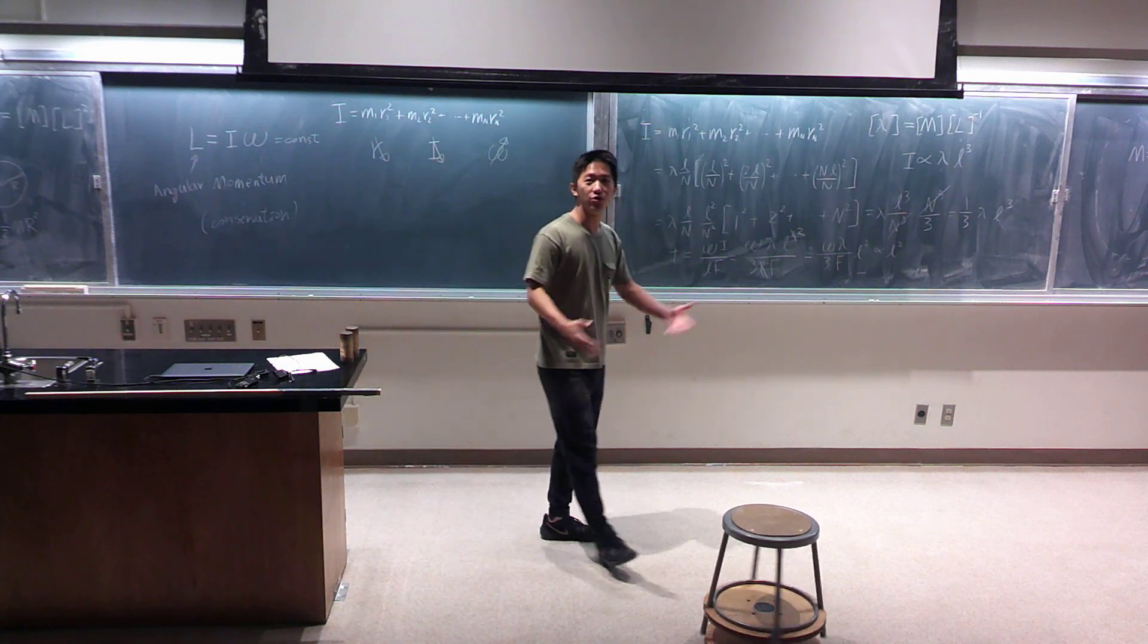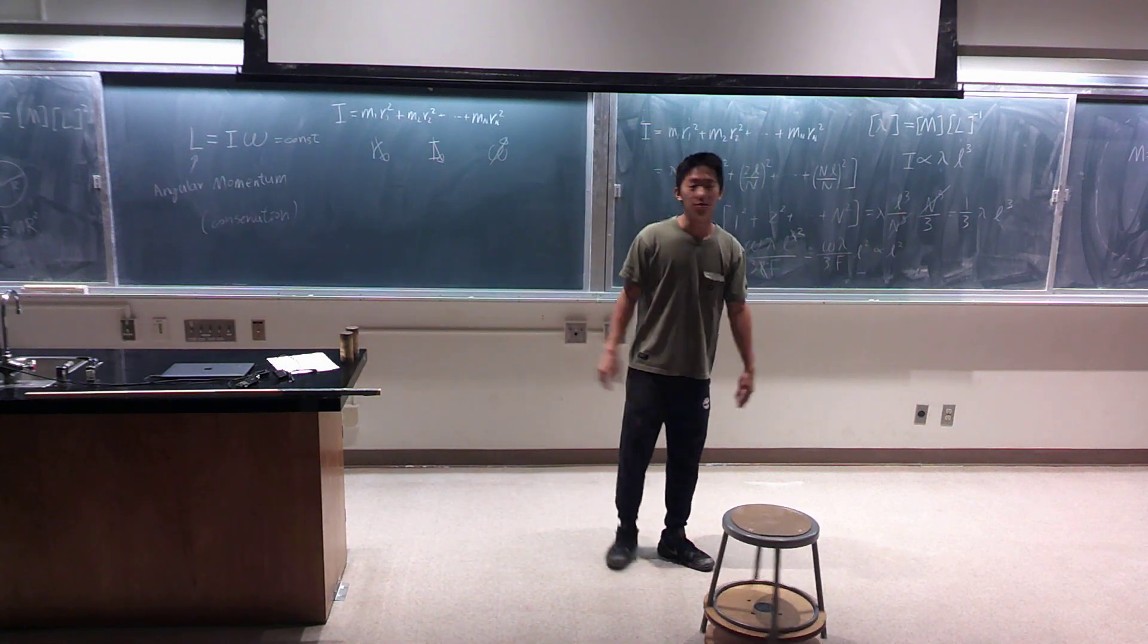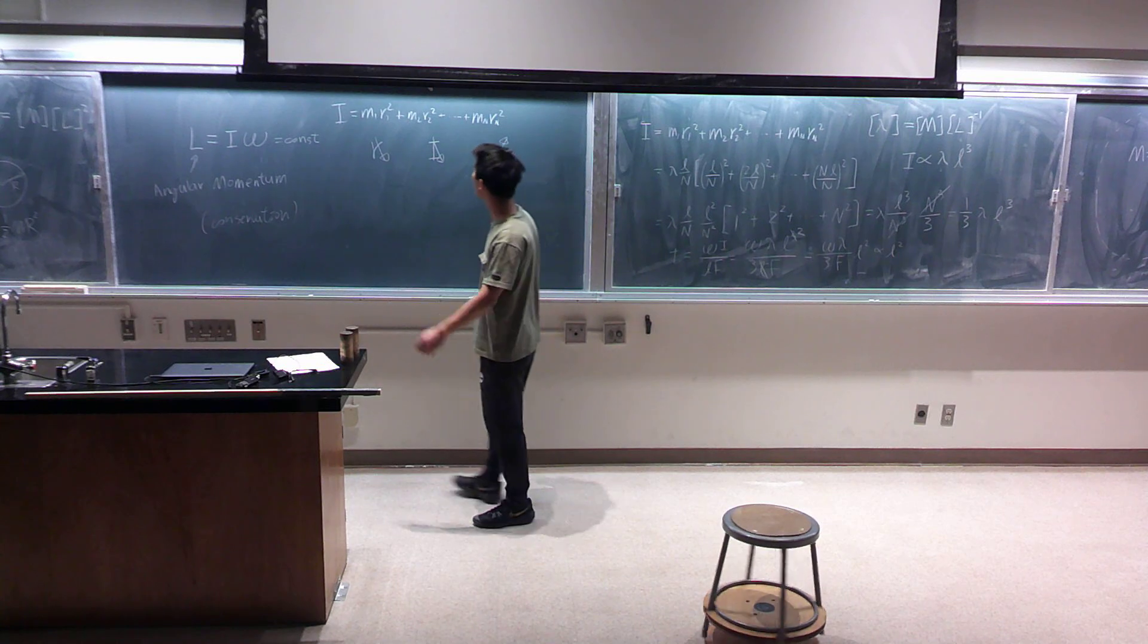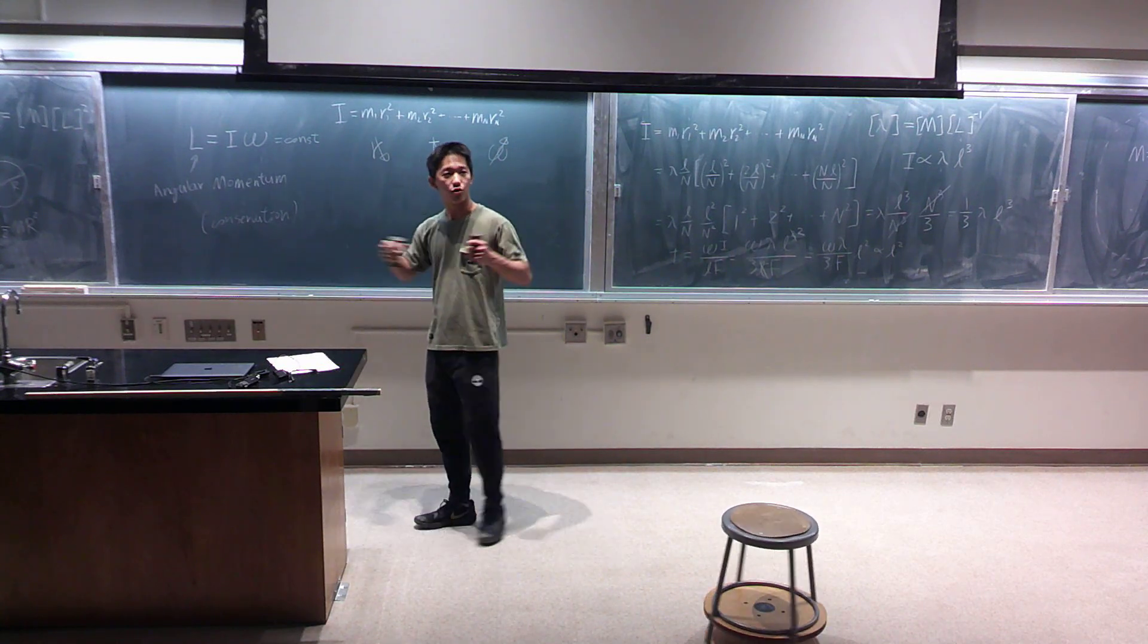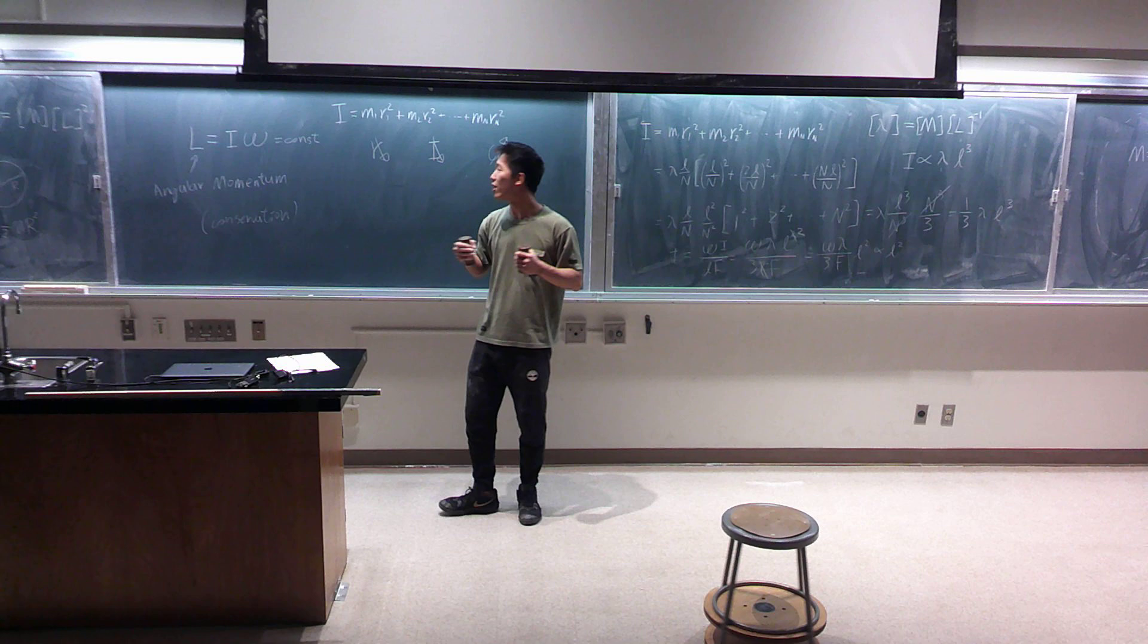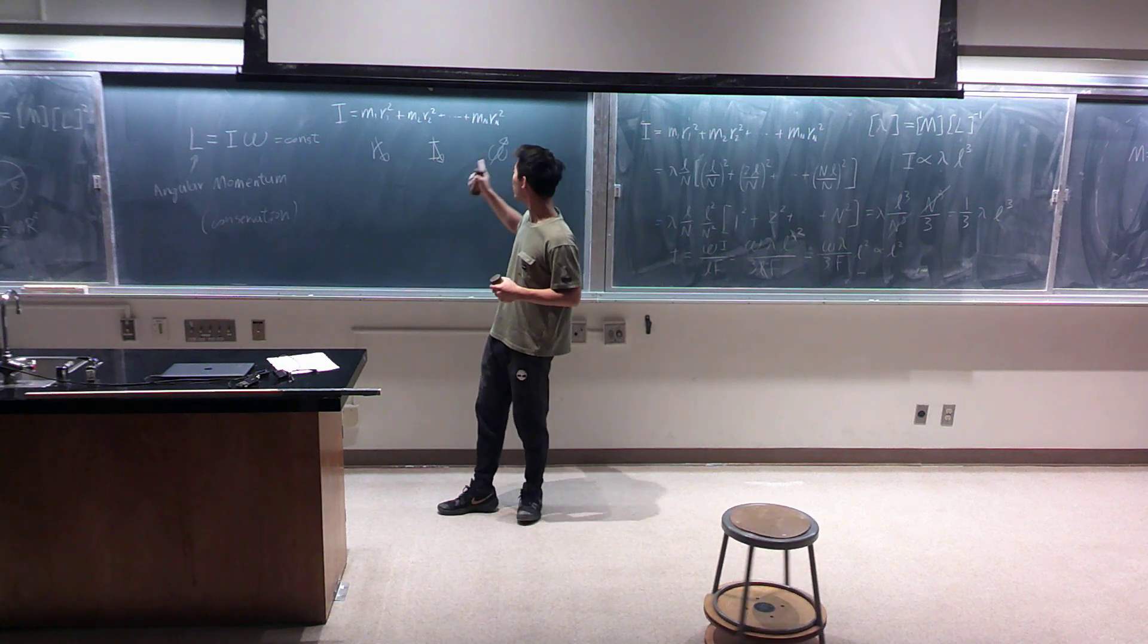For momentum conservation, you can't really change the mass to move faster. But for angular momentum conservation, you can change the mass distribution to change your moment of inertia and change the angular velocity.